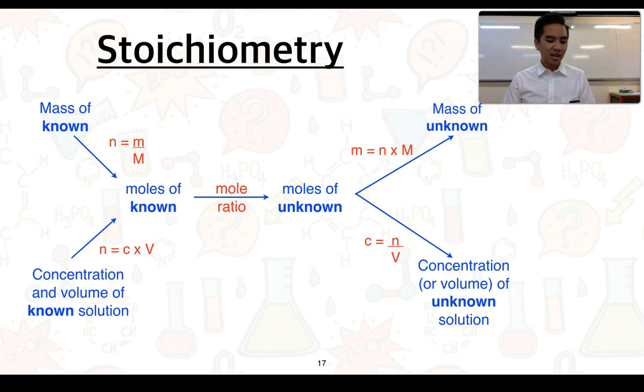To do a bit of a recap here, I've summarized the process that you follow using this diagram. This can essentially be used to solve for most, if not all, stoichiometric problems. Let's just say, for example, we are given the mass of various reactants and we are asked to work out the mass of a particular product that forms. So our starting point is here. We have the mass of a known substance, that's our reactant. What we then need to do is use this formula, n equals little m over big M, to convert that mass into a number of moles.